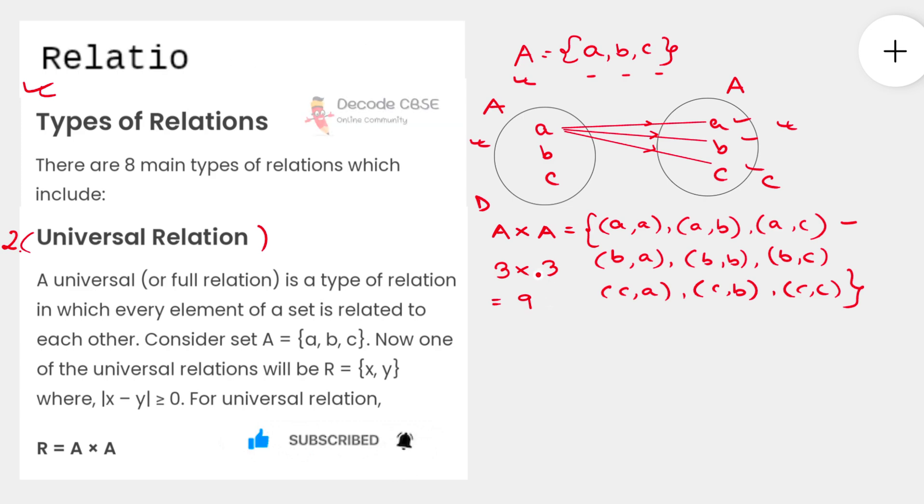Now let us come back to the universal relation and discuss what you mean by universal relation. A universal relation or full relation is a type of relation in which every element of a set is related to each other. If you remember, and those of you who watched the previous session will understand, this is exactly the opposite definition of what we learned about the null or void relation.